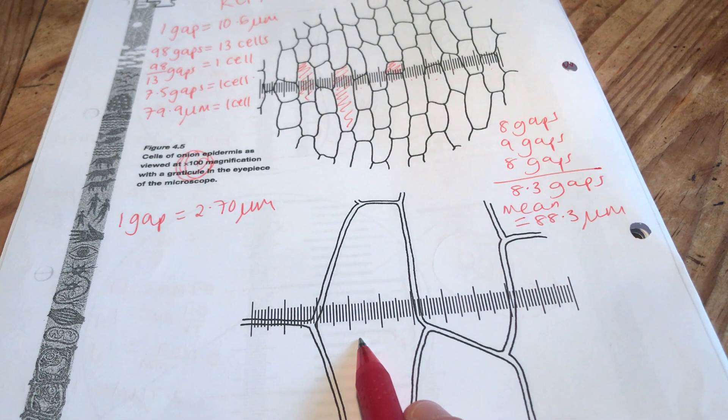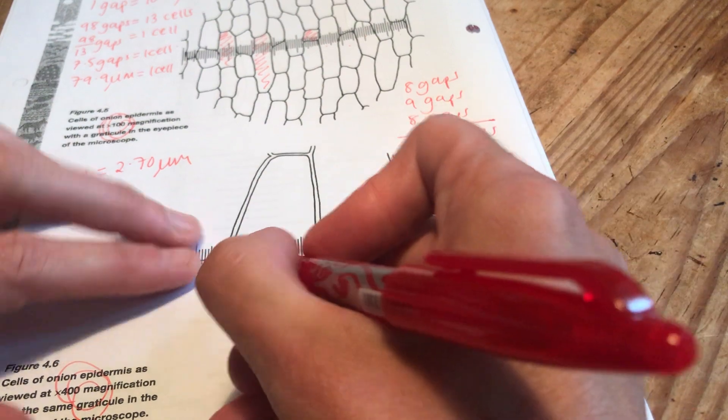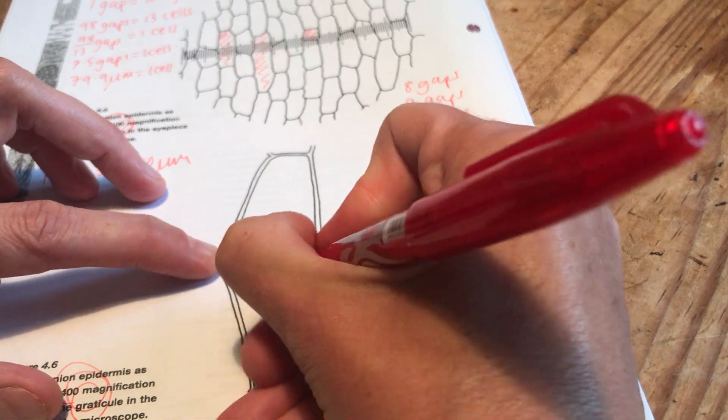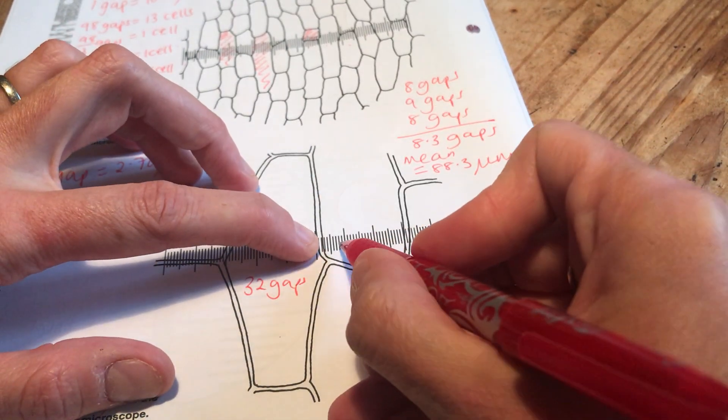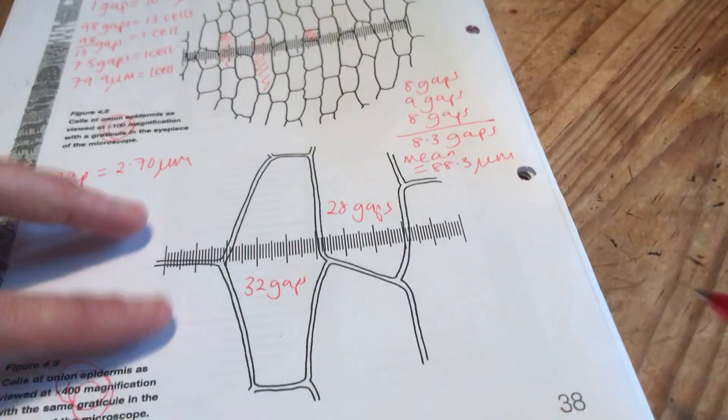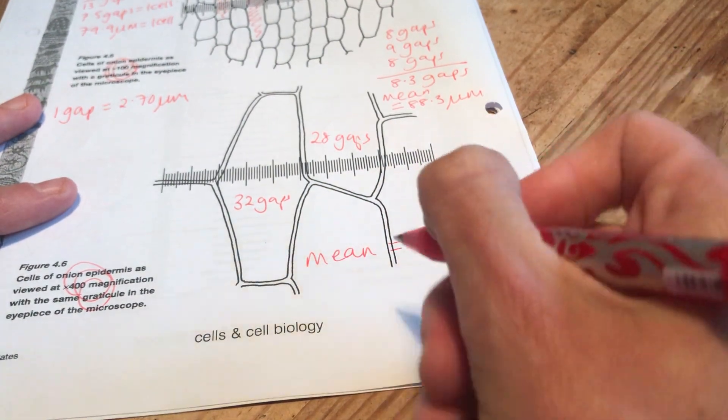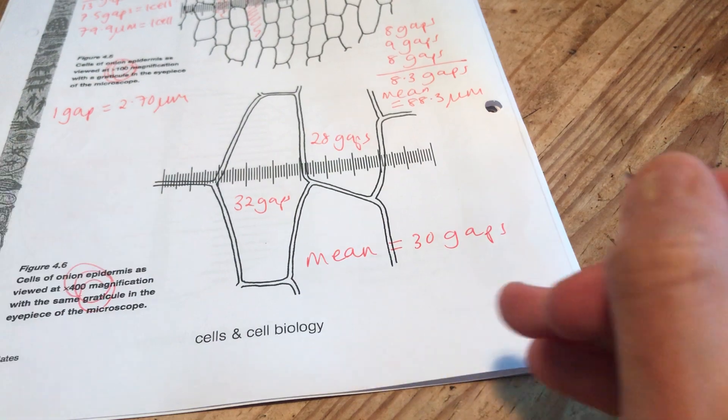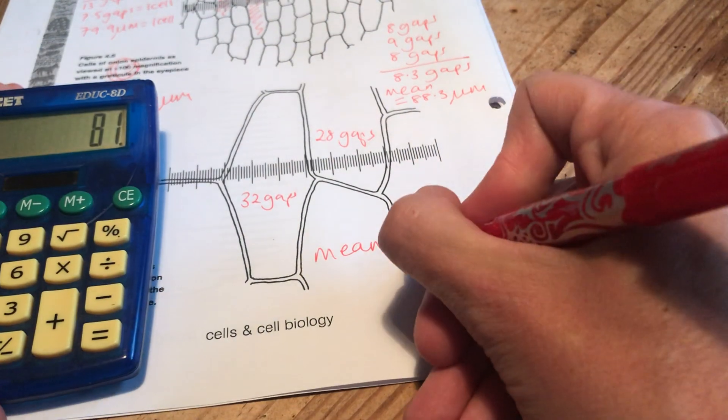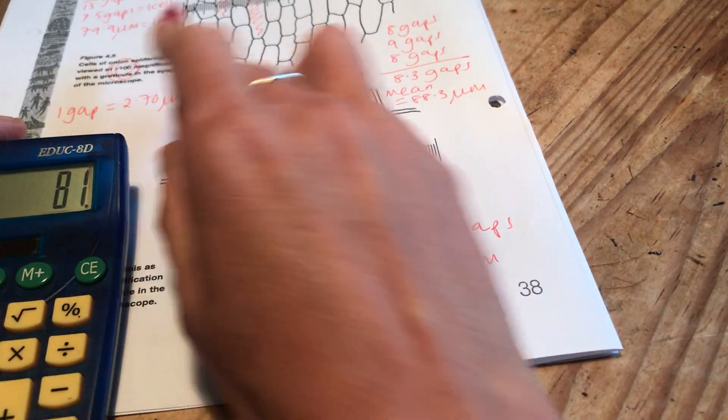It's also asked me to use this one, hasn't it? It says calculate the mean width of one cell using the 400 times magnification. So if I pick this cell here, this is worth, again, it's hard to know where to start. 10, 20, 30, 32 gaps, something like that. This one is 10, 20, 28 gaps. So I would say the mean here is 30 gaps. I know each gap is worth 2.7. So if I do 30 gaps times 2.7, I'm saying each one of those is 81 micrometers big, which actually fits in with these numbers, doesn't it?